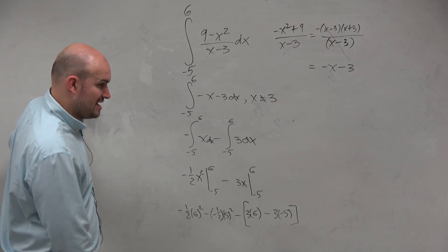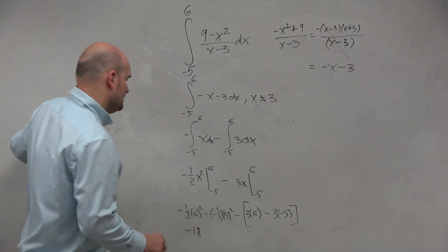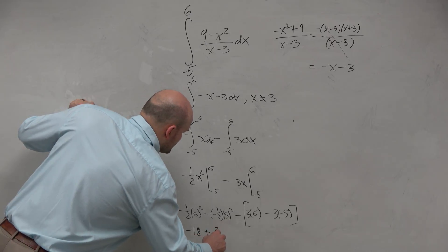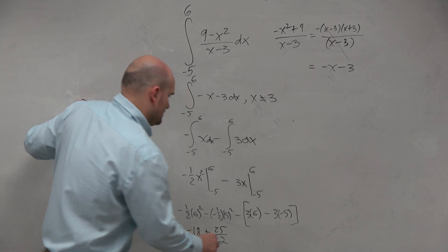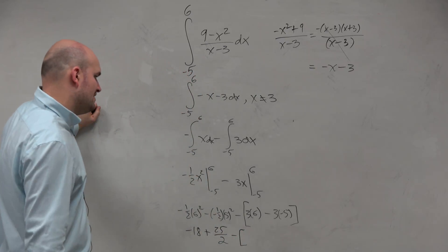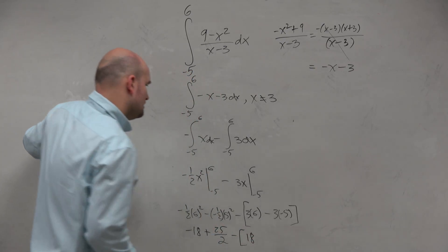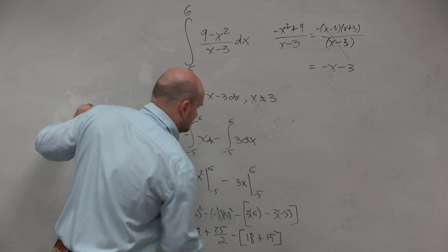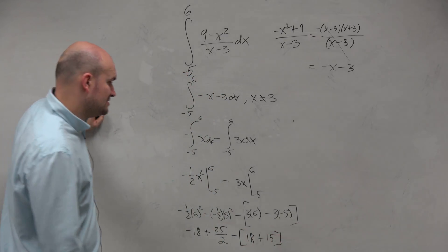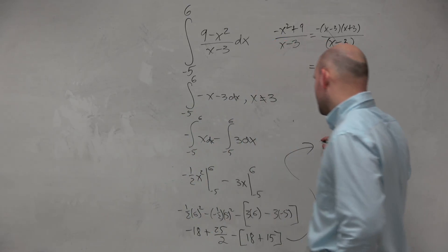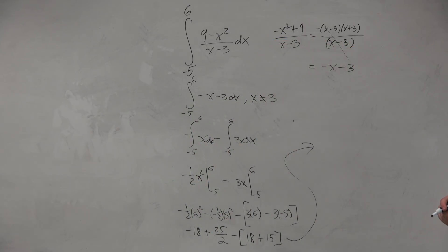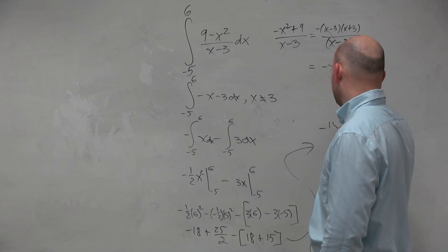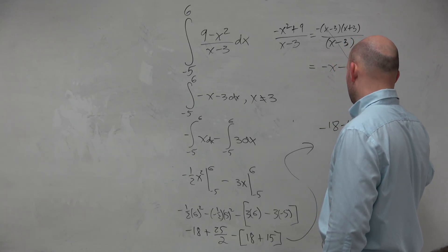Let's do this individually. 6 squared is 36, times one-half gives negative 18. That's going to be 25, and that double negative is positive, so that's positive 25 over 2. Then inside the brackets we have 18 plus 15, which is 43 — so negative 43. That leaves me with negative 18 minus 43 plus 25 halves. Now I can subtract to get negative 61 plus 25 halves.